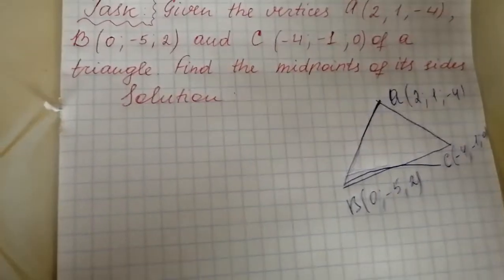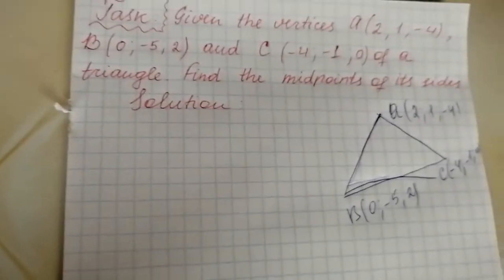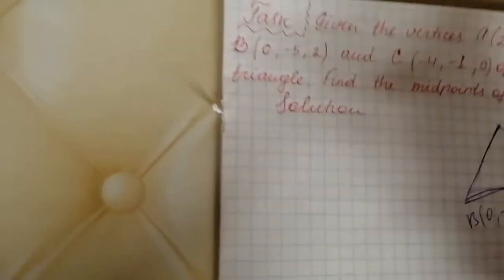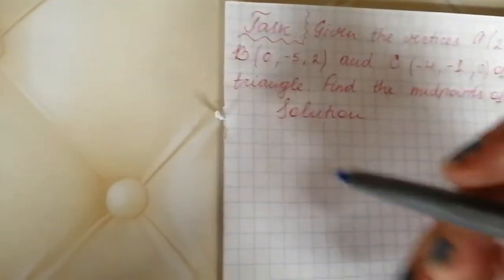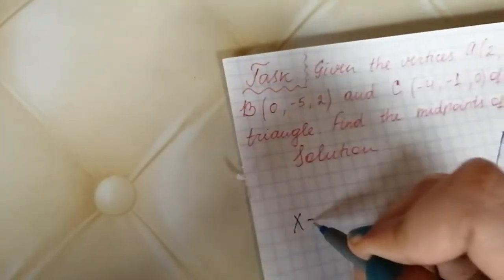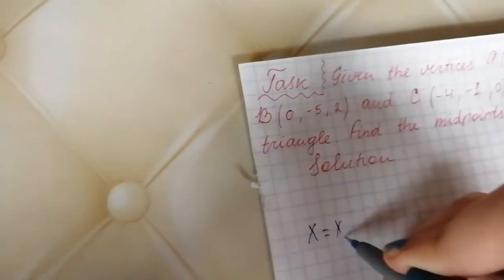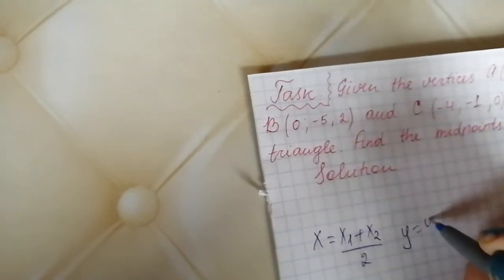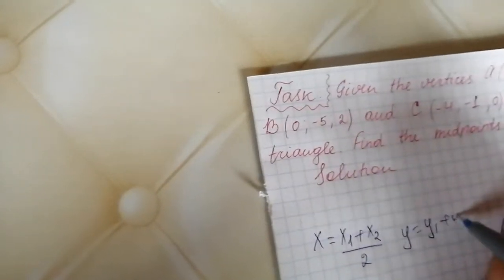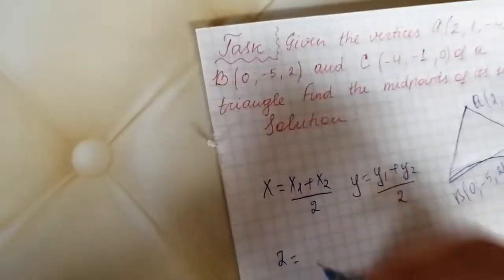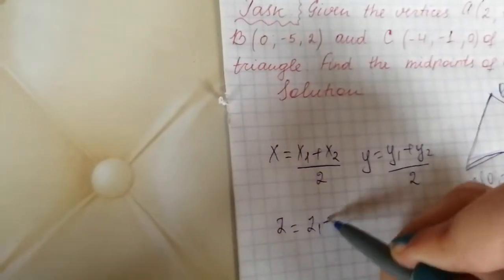The coordinates of the midpoints of the sides of the triangle are given by this formula: x is equal to x1 plus x2 over 2, y is equal to y1 plus y2 over 2, z is equal to z1 plus z2 over 2.